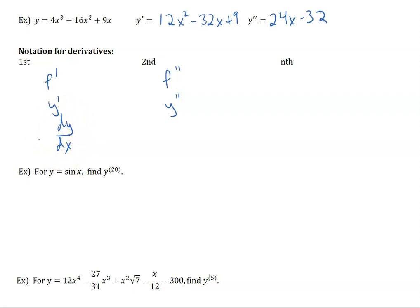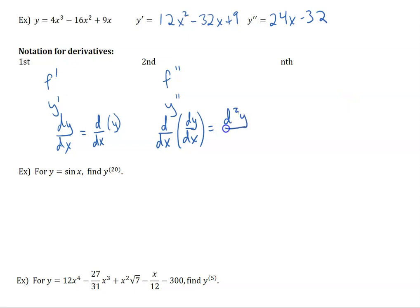For y prime, the derivative would be y double prime. Now this one — dy over dx — in the 2.5 lesson, we talked about how this is actually the operator: derivative with respect to x of y. So then if we want to take the second derivative, we need to take the derivative with respect to x of the first derivative, which is dy over dx, and then this we write as d squared y over dx squared. We don't need to put parentheses around the dx because d and x are not separate variables.